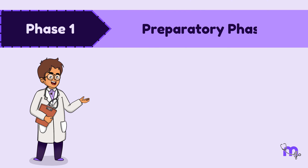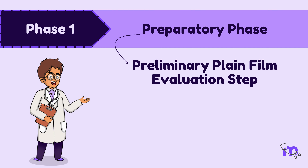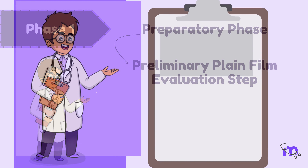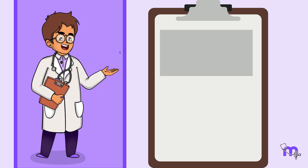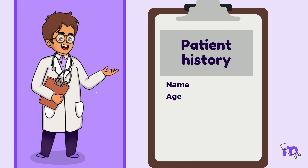Moving on to the procedure, it consists of three phases: Phase 1, the preparatory phase; Phase 2, the filling phase; and Phase 3, the emptying phase. Beginning with the preparatory phase, also known as the preliminary plane film evaluation step.